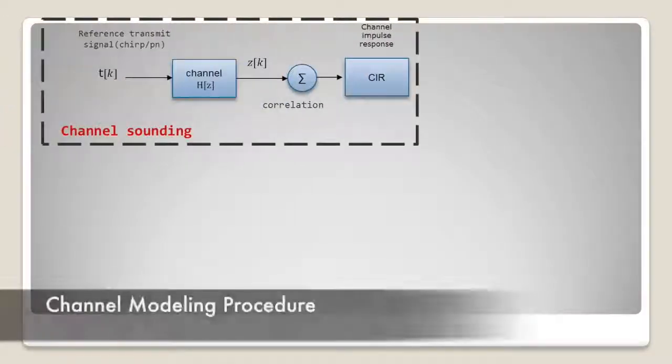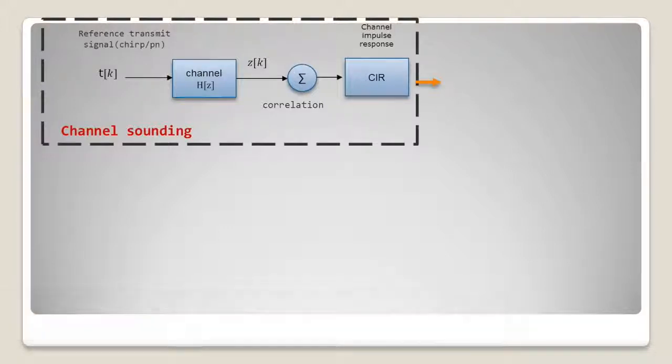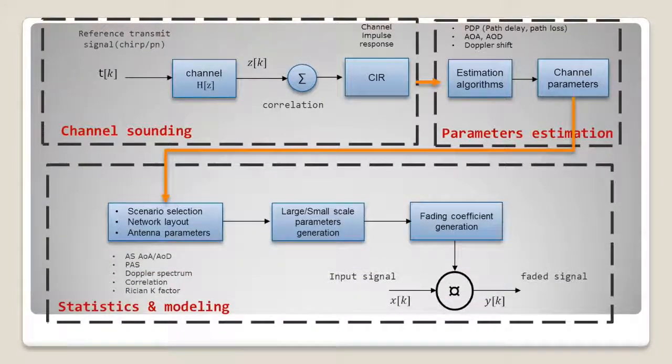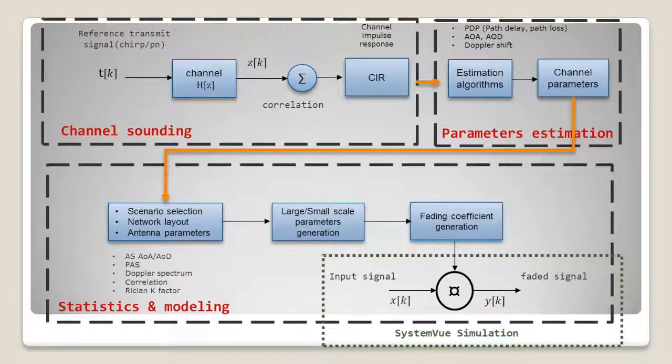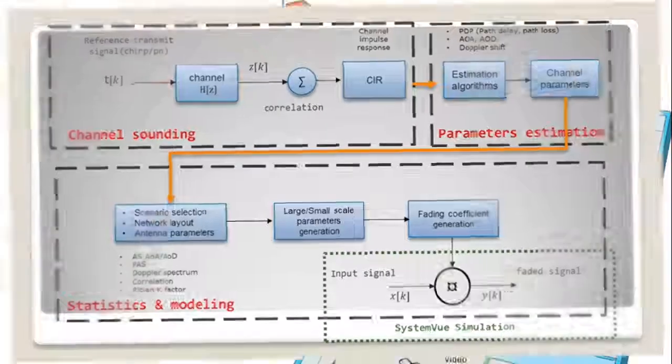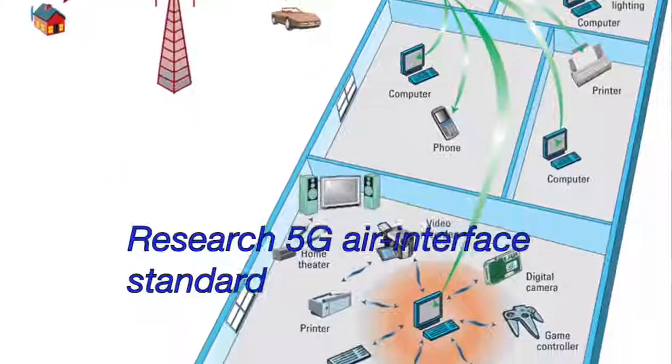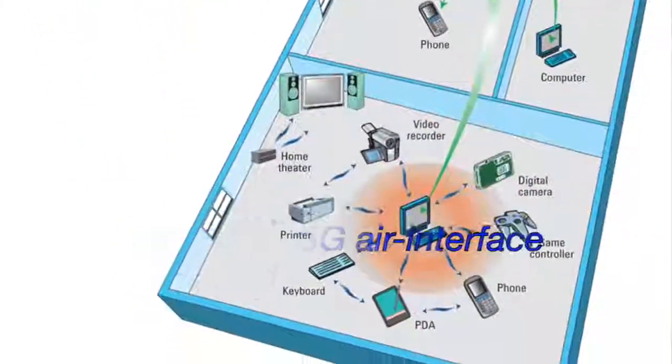First, the channel parameters must be extracted to establish the channel model. These parameters can then be used to validate the results for real channel simulation. The resulting channel model will then be used to develop and validate the air interface standard to ensure that the 5G data rate experience can in fact be achieved.